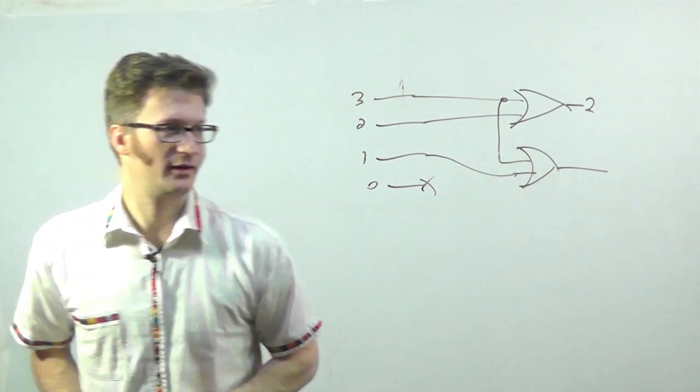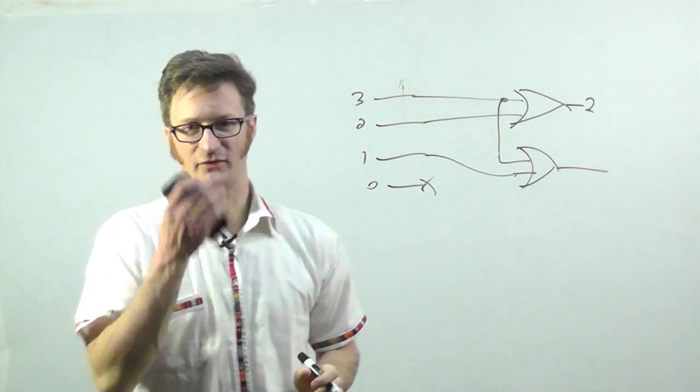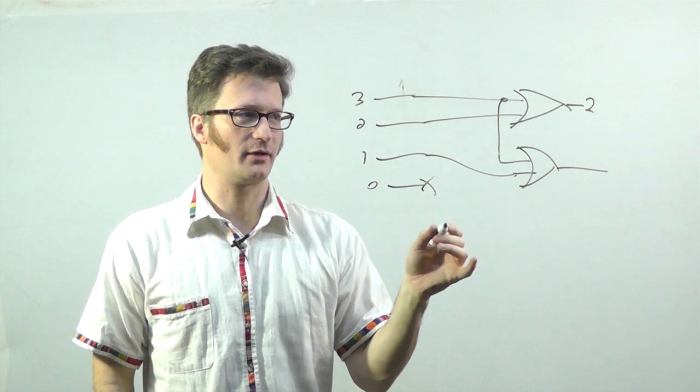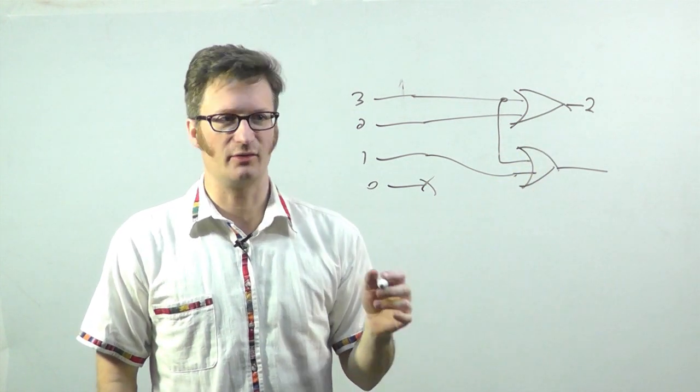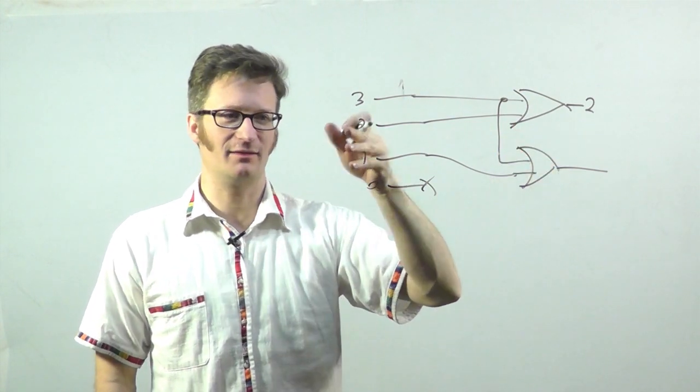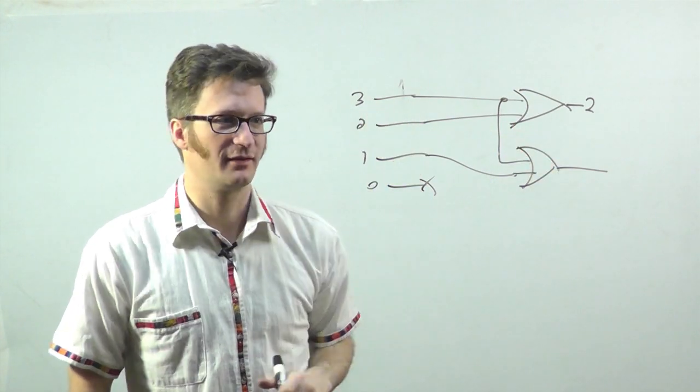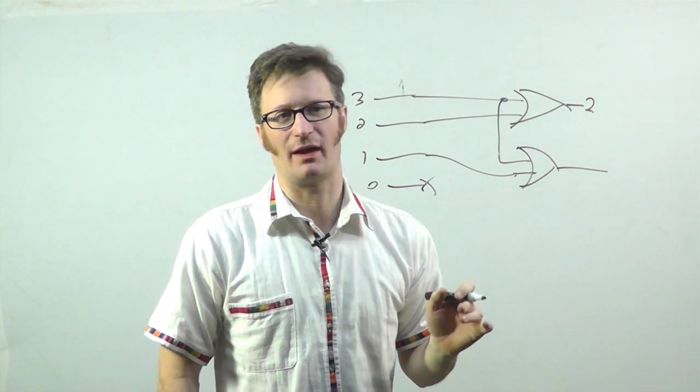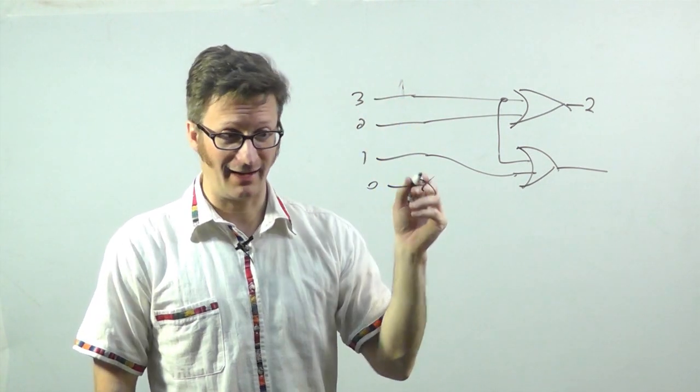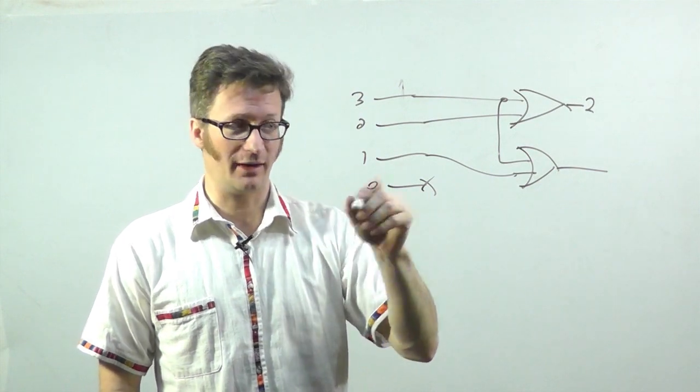But a priority encoder allows you to choose inputs that are of higher priority than the others, or to order which one will be displayed versus others. So, for this example, I'm going to create a priority encoder where three has the highest priority, and zero has the lowest.